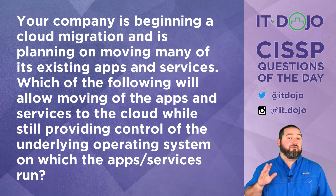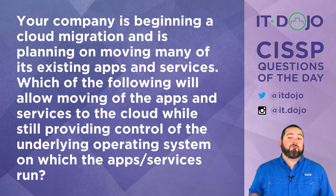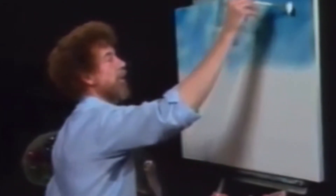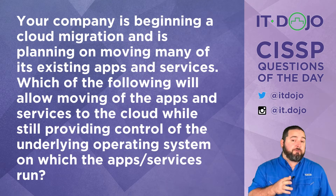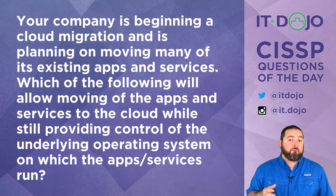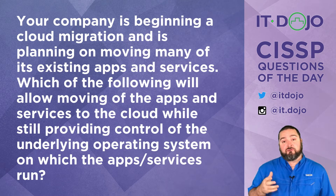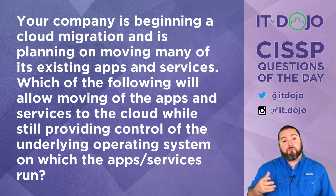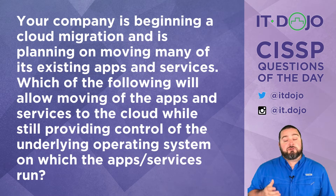That's exactly what a stream cipher does. Now here comes question number two — a little bit of cloud today. You work for a company that is preparing for a migration to the cloud, where you're going to move some of your existing servers and the services and apps that they run into the cloud. However, you need to retain control of the underlying operating system.